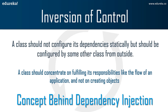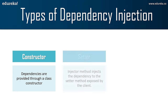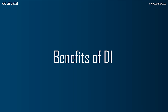There are three types of dependency injection: Constructor Injection — the injector supplies dependency through the client class constructor; Setter Injection (or Property Injection) — the injector injects dependency to the setter method exposed by the client; and Interface Injection — the injector uses an interface to provide dependency, and the client must implement an interface that exposes the setter method accepting the dependency.